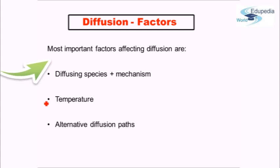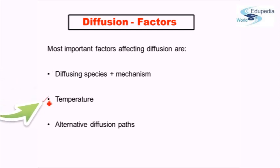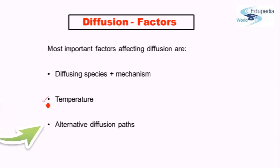The second factor we will be studying about is temperature — how the temperature is going to be affecting the diffusion process, we will see that in detail. And finally, we will study about some alternative diffusion paths. In addition to the traditional paths, that is the vacancy and the interstitial sites, there are some alternative paths which help in diffusion processes too.